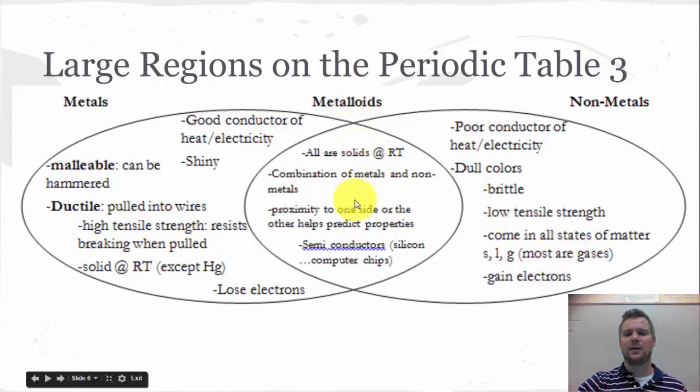Now, because metalloids are in between, we have the Venn diagram, they're going to have properties of both. So, a combination of metal and non-metal properties. However close they are to a certain side. So, for example, the two on the left-hand side, germanium and antimony, are going to be more metallic. Whereas boron, silicon, arsenic, and tellurium are going to be more non-metallic.